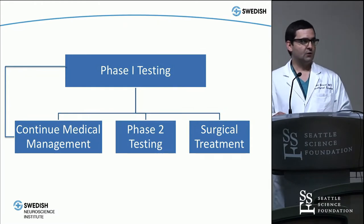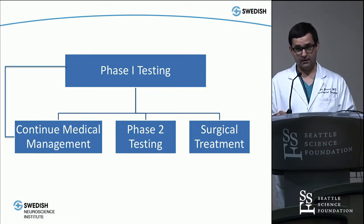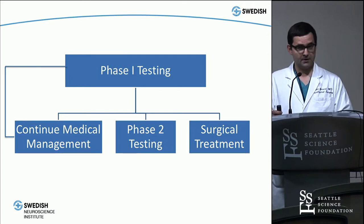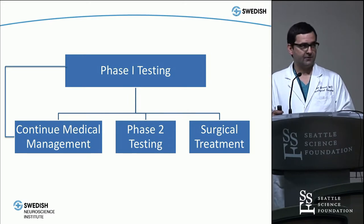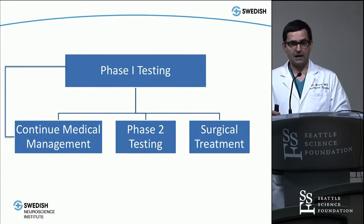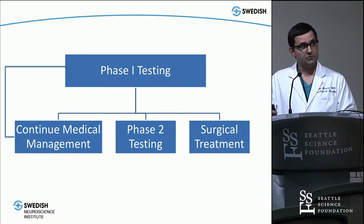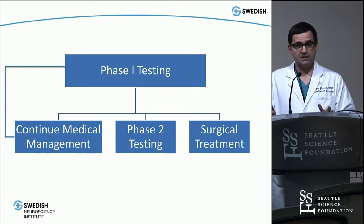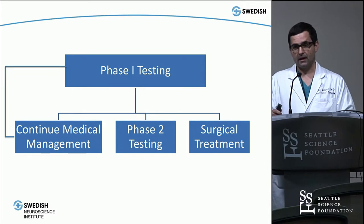What happens after phase one testing? A couple things can happen. You can continue medical therapy — sometimes there's no clear cause and patients go back to their medications. Others have classic semiology, say non-dominant temporal lobe epilepsy with mesial temporal sclerosis on MRI — those patients are surgical candidates and don't need phase two monitoring. Others, with medically refractory epilepsy and multifocal onset that generalizes very quickly, might be candidates directly for VNS.